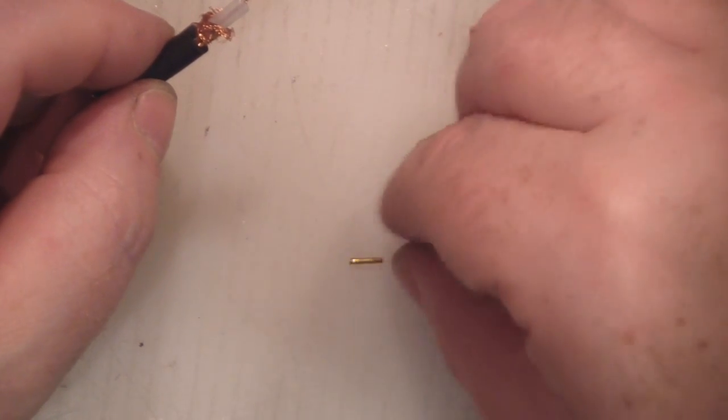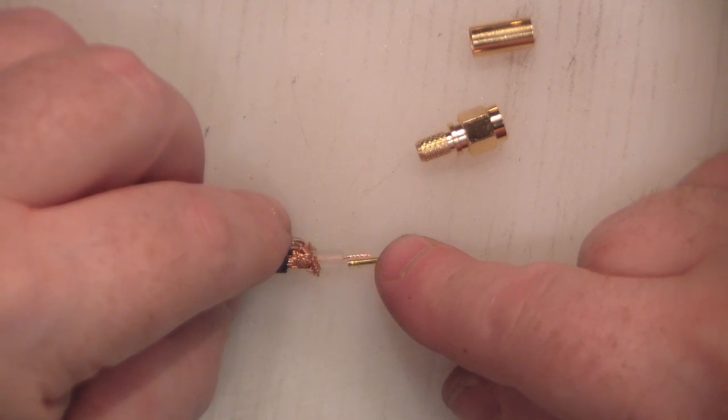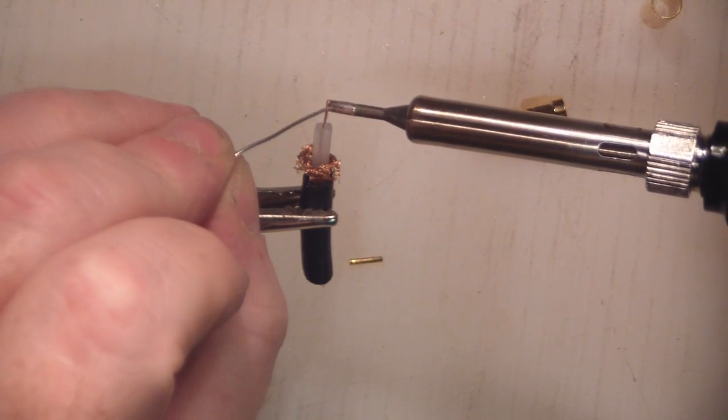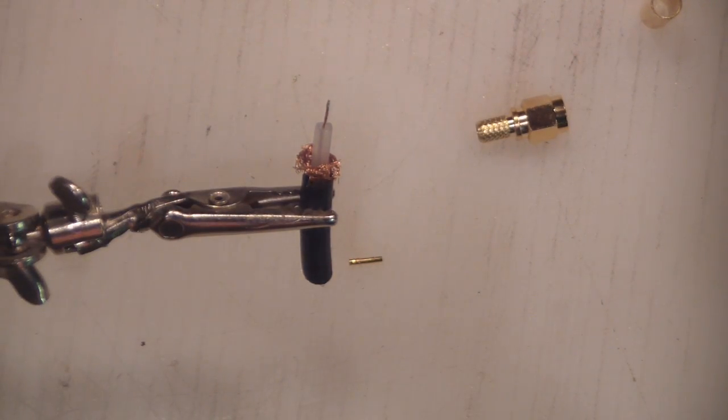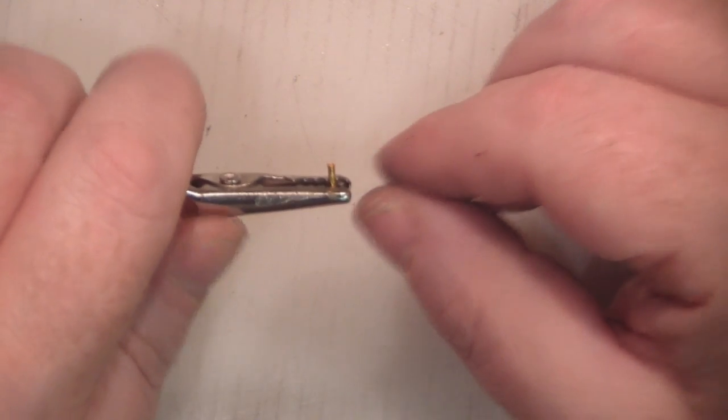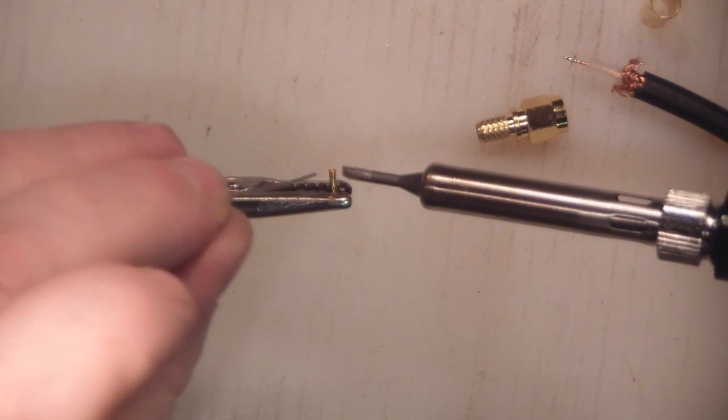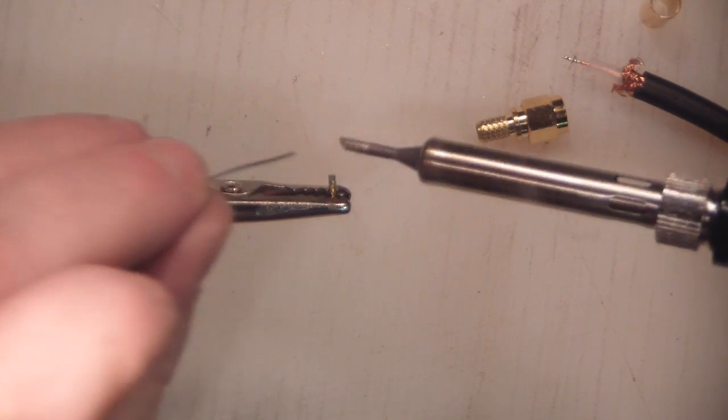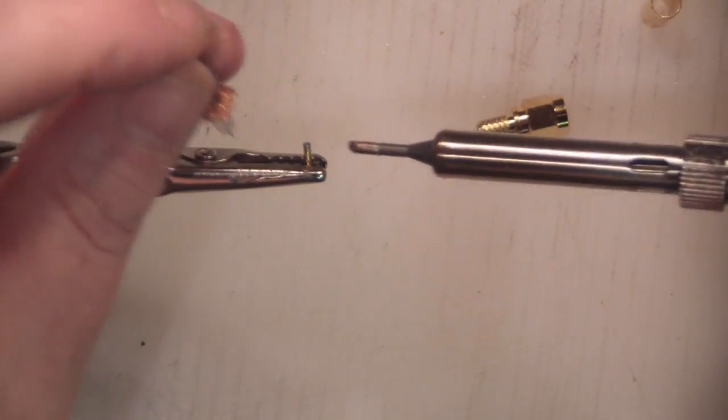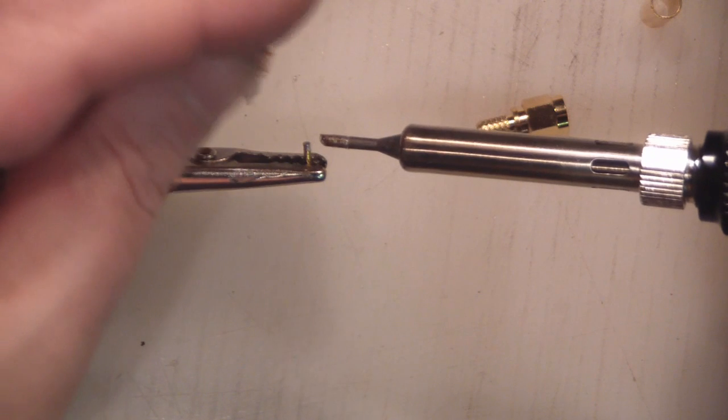So just tin the end of this, we don't want a lot of solder on there otherwise it won't fit in the pin. I'm going to apply a little bit of heat to the outside of this pin just get a small amount of solder in there. So leave the pin actually in the clamp and again we're just going to heat up the side of that pin and insert this as it's melted.